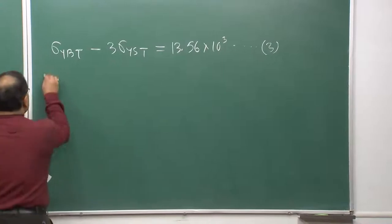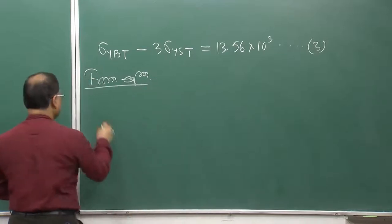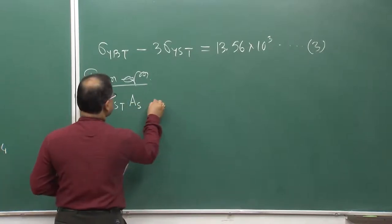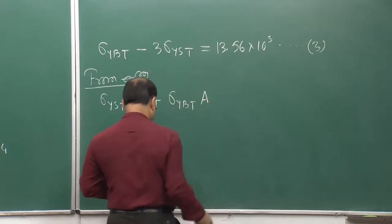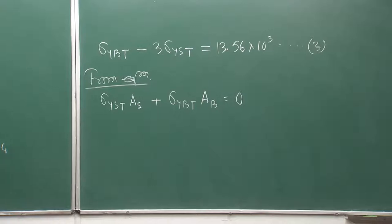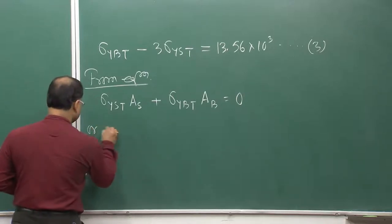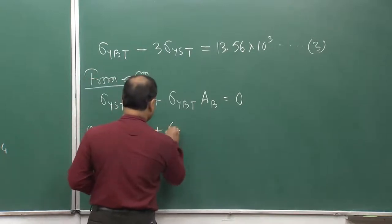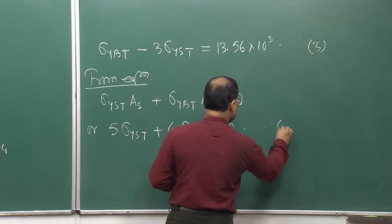From equilibrium — which remains unchanged — sigma_yst multiplied by the cross-sectional area of the sleeve plus sigma_yvt multiplied by the cross-sectional area of the bolt must equal zero, because no external forces are acting. This gives equation 4: 5·sigma_yst + 4·sigma_yvt = 0.